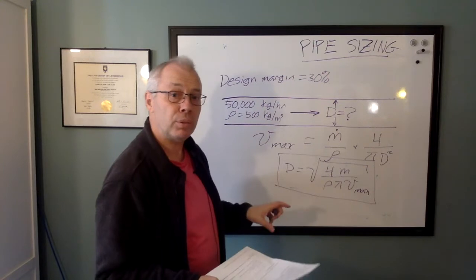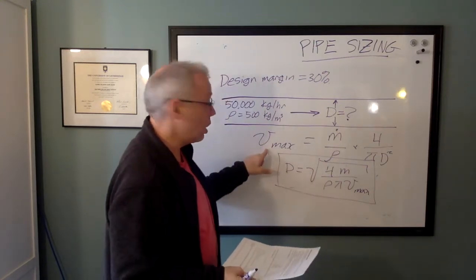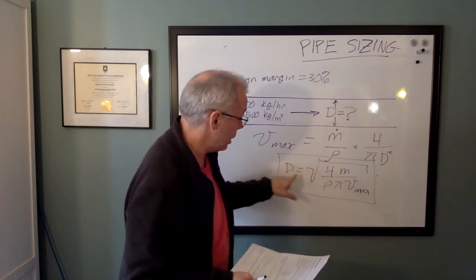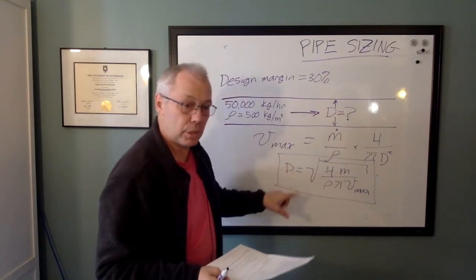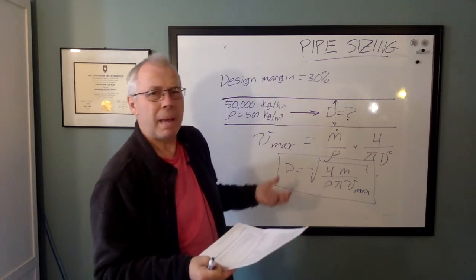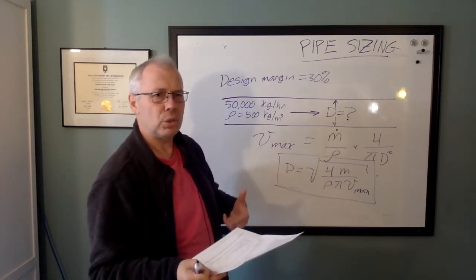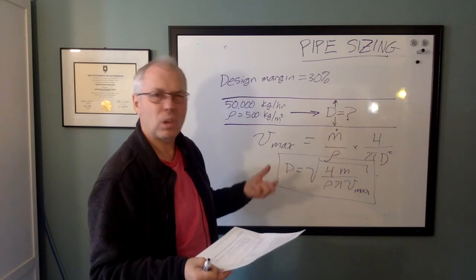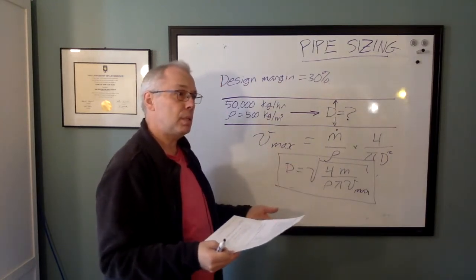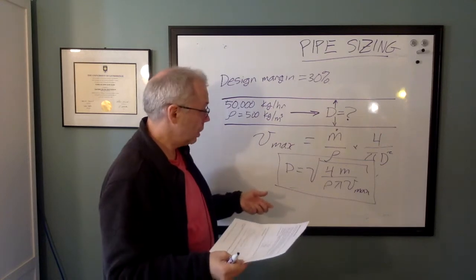So someone could say, size it for a maximum velocity of three meters per second, and you can go through the math and you can say that's the diameter. But there's nothing magic about three meters per second. Is it good for erosion? Couldn't tell you. It's a common number. If it's a vapor, it might be 30 meters per second.